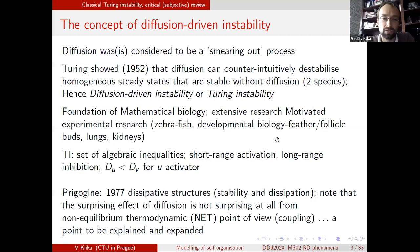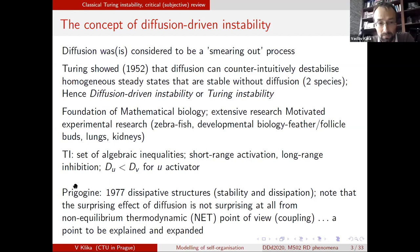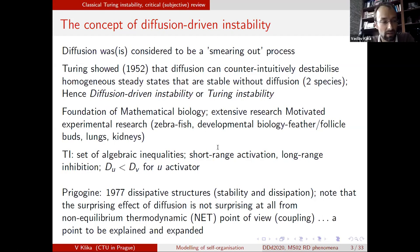This led to a huge area of mathematical biology and really extensive research. I'll briefly mention how the Turing instability conditions are derived, but what I would like to draw more attention to is an alternative approach to this type of emergent structures, going back to Prigogine, who looked at dissipative structures from a very different perspective, though there are some common features.